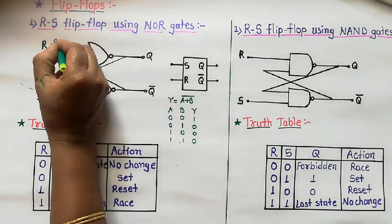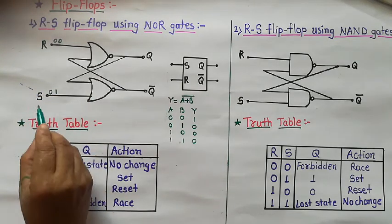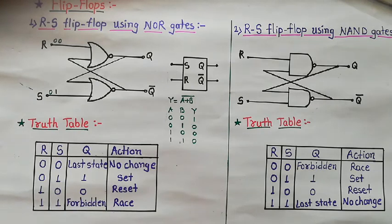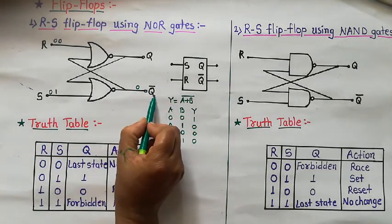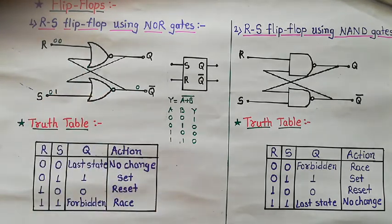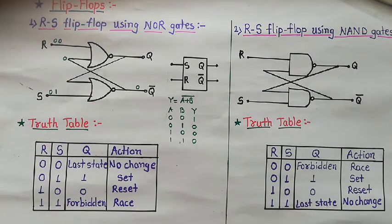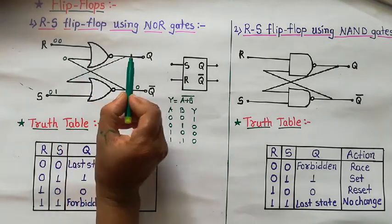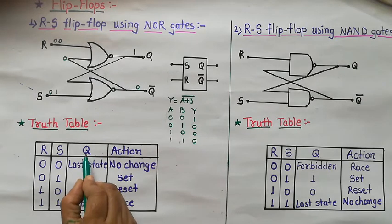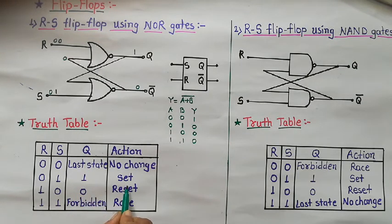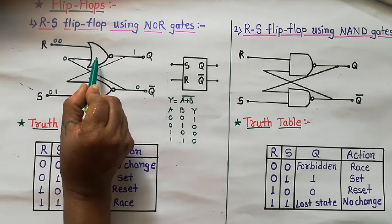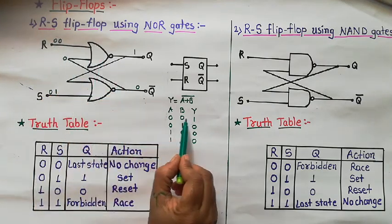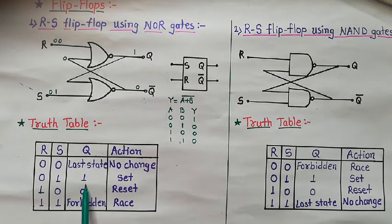If R=0 and S=1, then the lower NOR gate has one input high. Because one input of the lower NOR gate is high, its output is low — that is Q bar equals 0. This low Q bar is given to the upper NOR gate as input. Then the inputs to the upper NOR gate are 0 and 0, so its output equals 1, that is Q equals 1. When Q equals 1, the flip-flop is set.